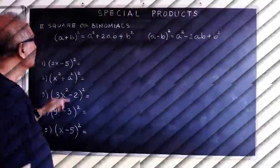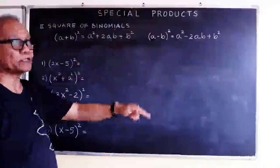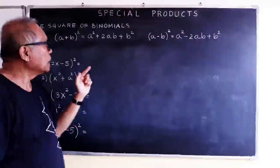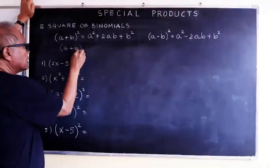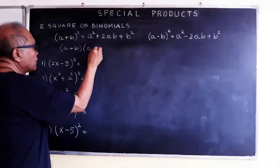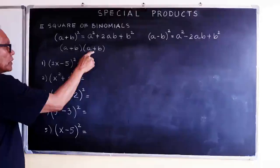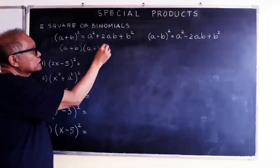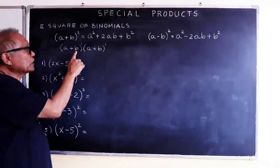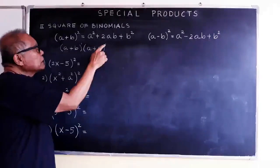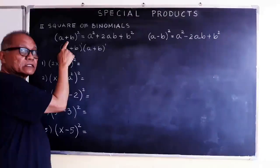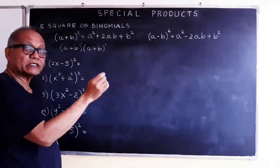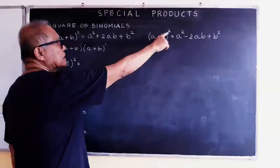First we have the second special product, which is the square of polynomials. We have a plus b and a minus b. So a plus b times a plus b — they are the same, and the exponent is 2. In multiplication we add exponents: 1 plus 1 equals 2, then copy the base. The other one is a minus b times a minus b, so the base is a minus b to the second power.